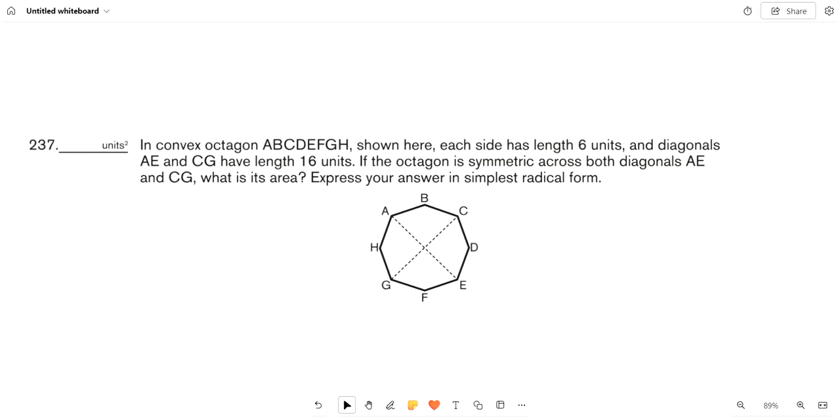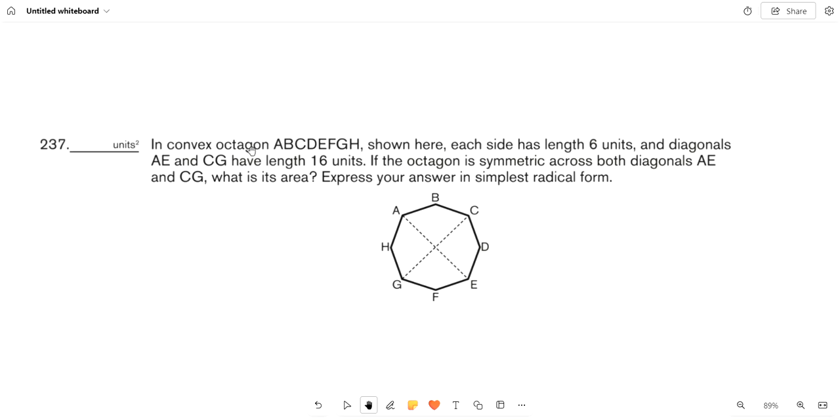This is week 57 quiz, number 237. In convex octagon ABCDEFGH shown here, each side has length 6 units and diagonals AE and CG have length 16 units. If the octagon is symmetric across both diagonals AE and CG, what is the area?